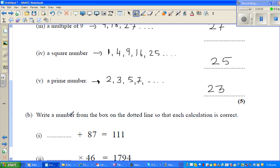Now write down the number from the box so that each calculation is correct. What plus 87 equals 111? I know 87 plus 3 is 90, then 90 plus 20 is 110, and then 110 plus 1 equals 111.